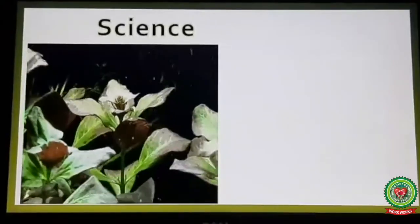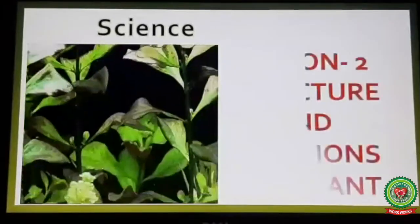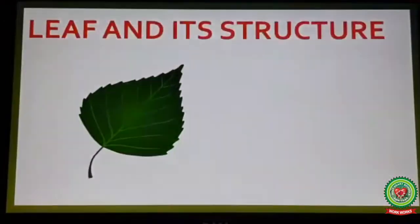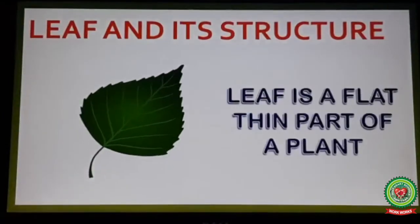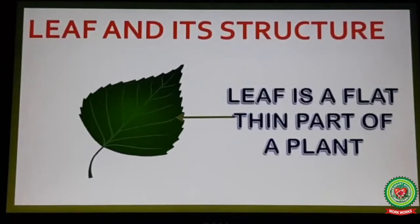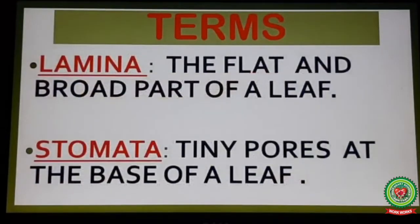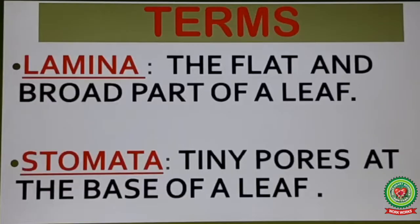Good morning students. As I have already told you, each part of a plant has its own function. Today I will discuss the flat, thin, and green part of a plant — that is the leaf — and its structure. Open your book on page 18. The key terms for this topic are: lamina, the flat and broad part of a leaf, and stomata, the tiny pores at the base of a leaf.